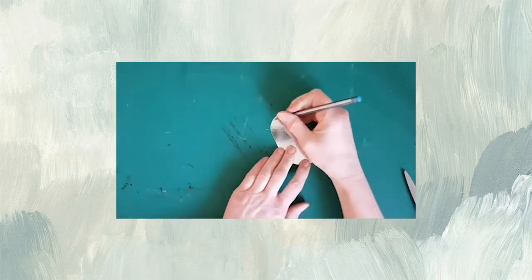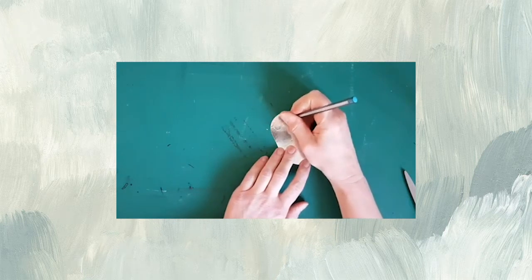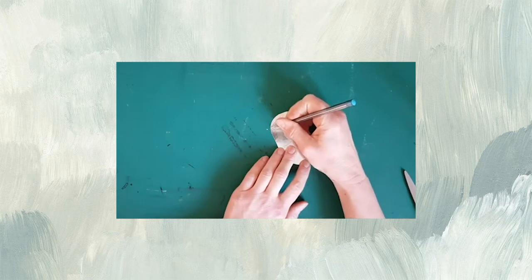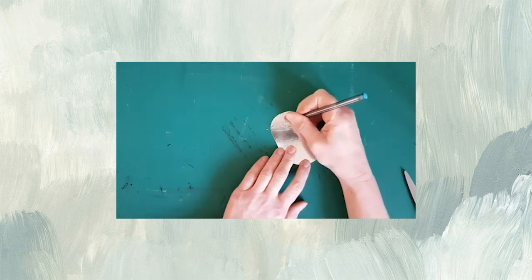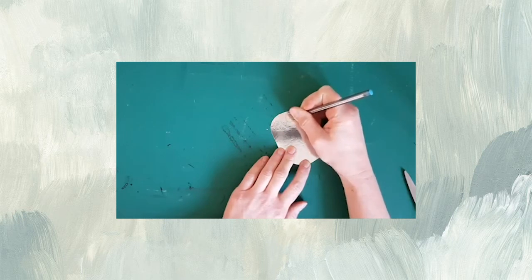Once I've got that, I need to get a biro, an ordinary biro, and start drawing my owl in. So I'll do his eyes—first big starey eyes and a beak. Another big starey eye.